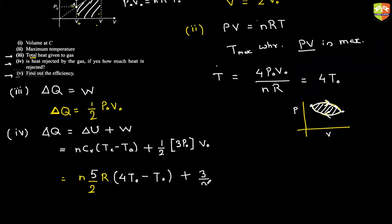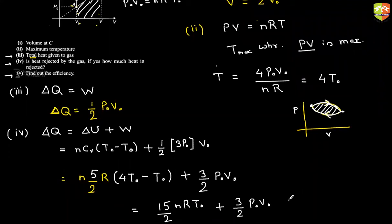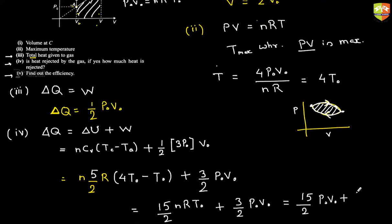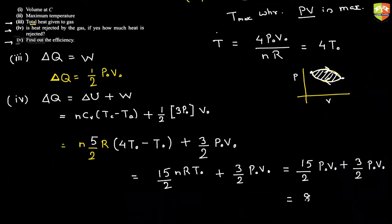Continuing the calculation: nCv × 3T₀ gives (5R/2) × 3nT₀ = 15/2 × nRT₀ = 15/2 × P₀V₀. The work done in C to A (area of the trapezoid) is ½ × (2P₀ + P₀) × V₀ = 3/2 P₀V₀. Adding these gives heat rejected = 9P₀V₀.